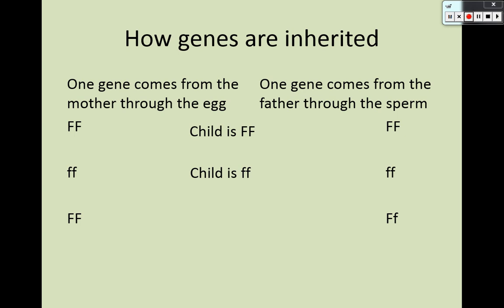If the biological mother is homozygous dominant and the biological father is heterozygous, then the child could be homozygous dominant or heterozygous, with a 50-50 chance of either genotype. And yet, because big F is dominant, they would actually have the same phenotype as both of their parents. So these parents would have the same phenotype even though they have different genotypes.